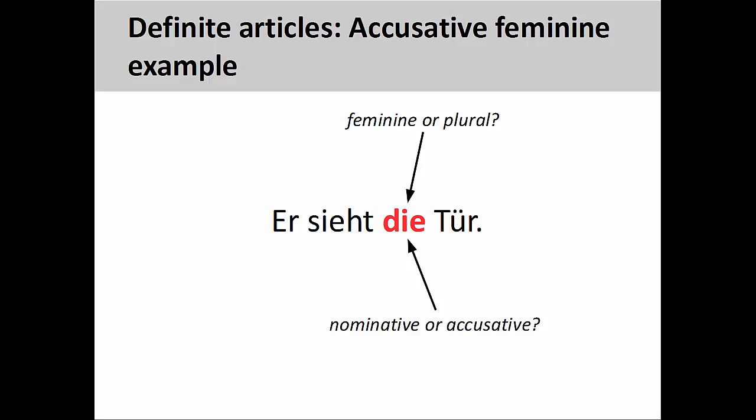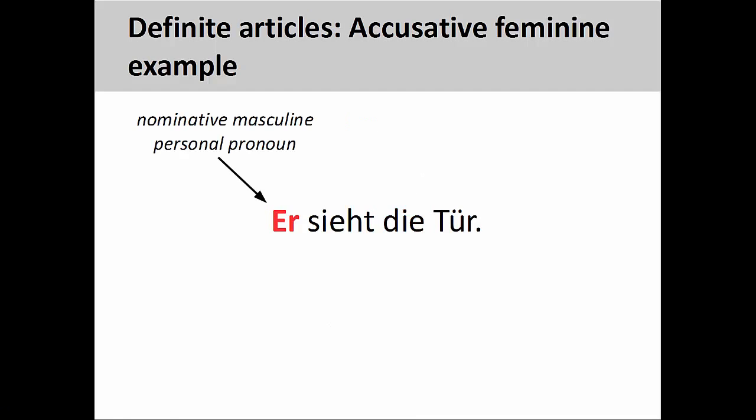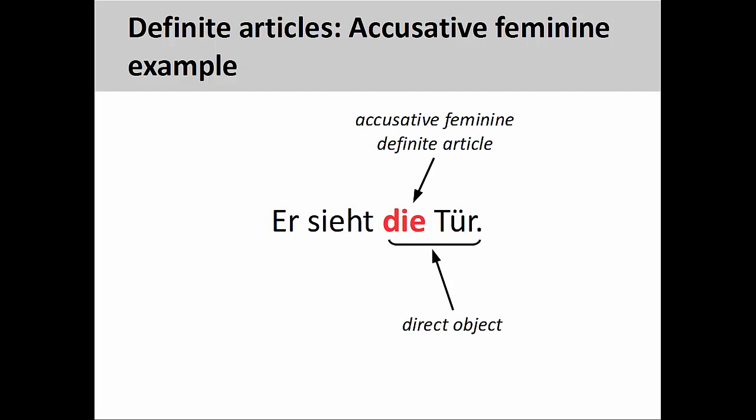In this case, the masculine personal pronoun Er is in the nominative case and must therefore function as the subject of the sentence. The noun Tür, therefore, receives the action of being seen and is the direct object. In this case, Die most likely is a feminine definite article in the accusative case.